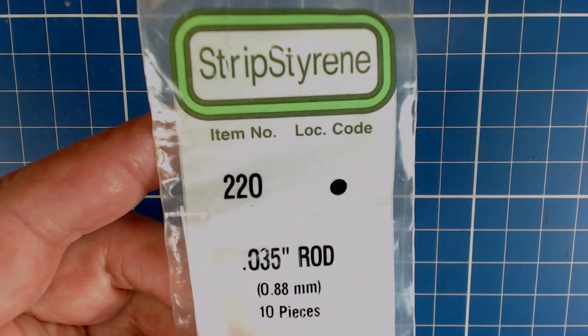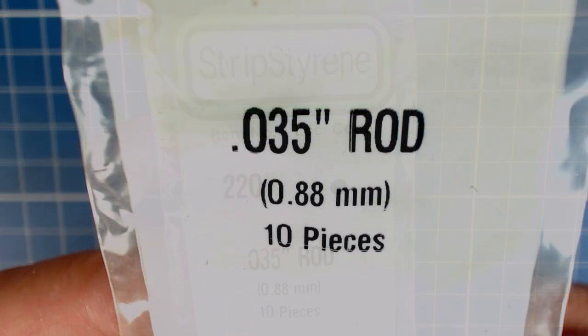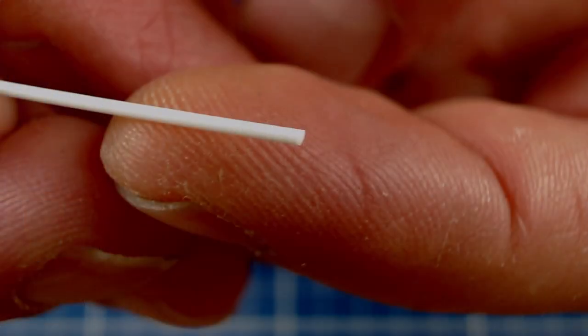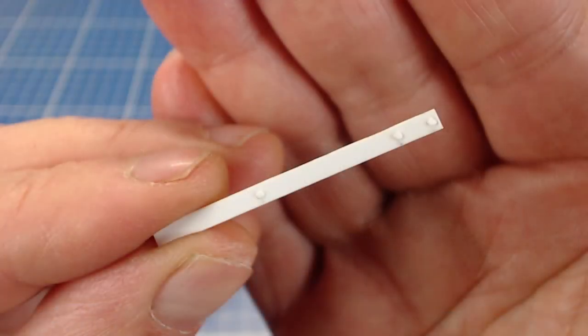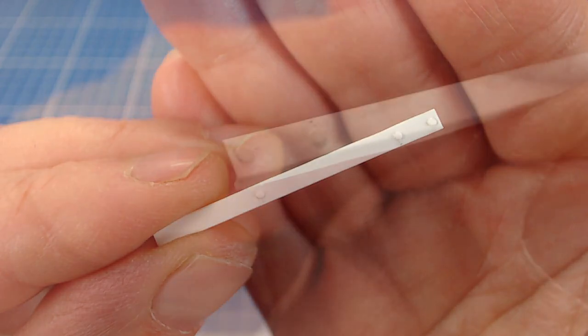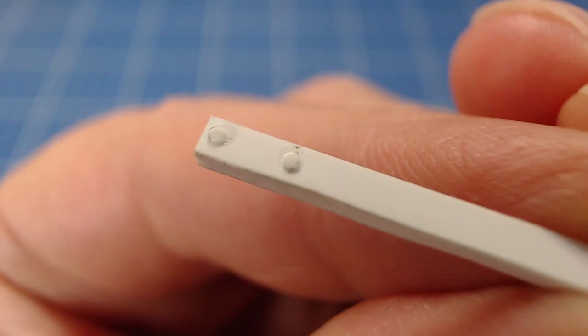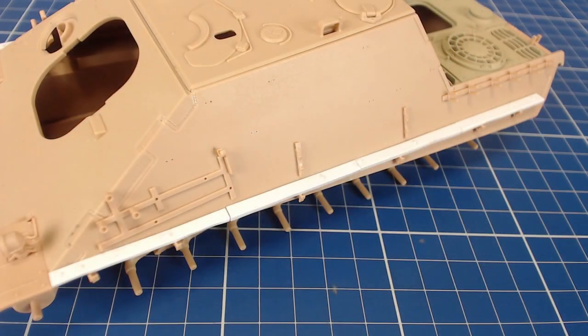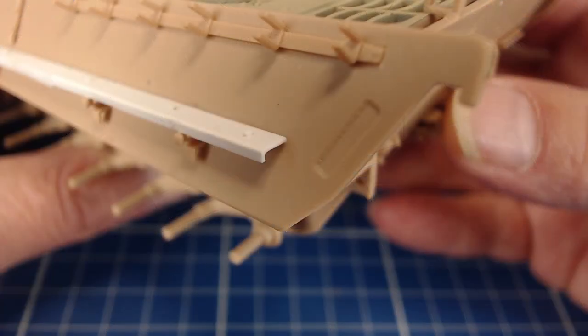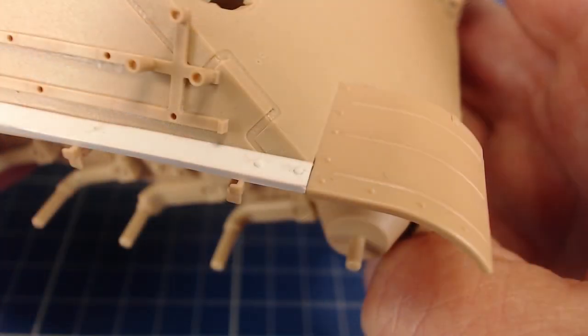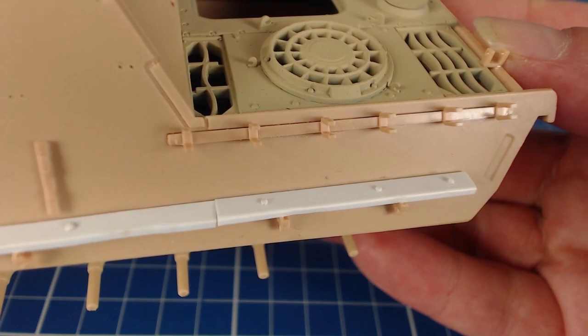The PE flashing pieces have tiny bolt head details on them. To make these, we'll use thin slices of 0.8mm styrene round stock. And here's how the bolt heads look once attached. And here are the pieces once attached to the hull. These flashing strips were made of thin sheet steel on the real vehicle, so the little dents and deformations on our pieces look convincingly real.